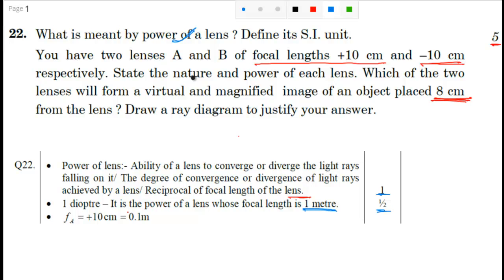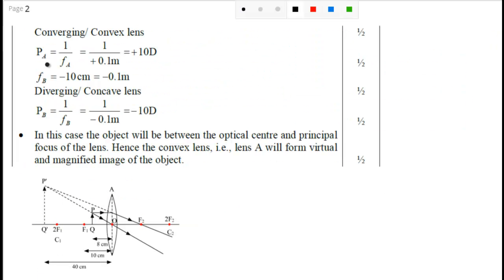Now moving forward, state the nature and power of each lens. So in first case, if fA is plus 10 cm, you know that power of a lens is inversely proportional to the focal length. So P equals 1 by F. So you see here PA equals 1 by fA. That is your lens A. So it is 1 upon 0.1 meter and that will come to 10 diopter.